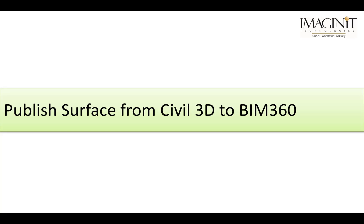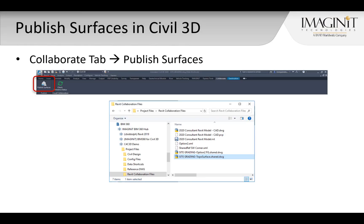The Civil 3D drawing and Revit model now share a coordinated reference point. A major benefit of this feature is the automatic placement of a toposurface linked to the Revit model. In order to link a toposurface in Revit, a shared file needs to be published to BIM 360 from Civil 3D. The BIM 360 functionality within Civil 3D allows us to publish a Civil 3D surface directly to BIM 360 Docs, where a Revit-compatible shared file is produced.